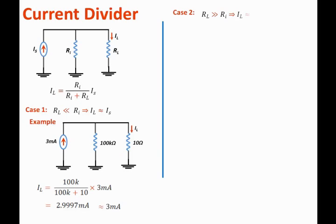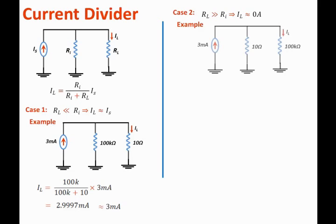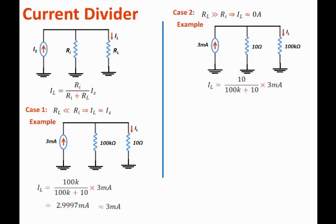The second case is when the load resistance is much much larger than the source resistance; then the load current can be approximated to be 0. In this example, we have the load resistance to be 100k, while the source resistance in parallel with it equals 10 ohms. Clearly the load resistance is much much larger than the source resistance, and we expect the load current to be very small. By applying the current divider equation, Il equals the opposite resistance, 10 ohms, over 100k plus 10 ohms, times 3 milliamps. This equals 0.29997 microamps, which is much much smaller than the total current. We can approximate that to roughly 0 amps.